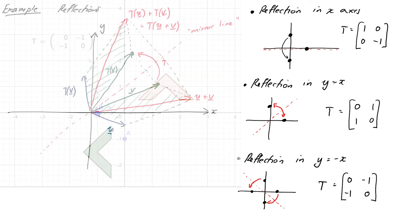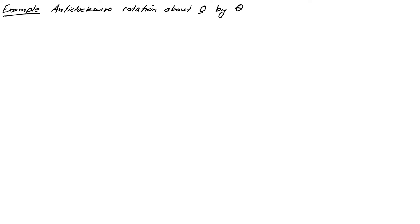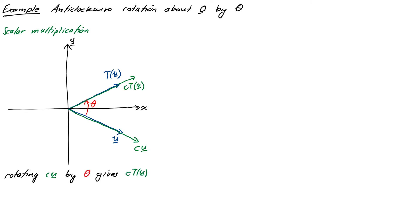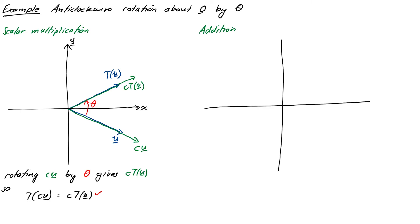It turns out rotations around the origin are also linear. Imagine a transformation that rotates points anti-clockwise by angle theta around the origin. For scalar multiplication: T(c·u) means stretch the vector by factor c then rotate, while c·T(u) means rotate first then stretch by c — we get the same result in both cases. For addition: T(u+v) means add the two vectors first then rotate the result, which is the same as T(u)+T(v) — rotate first then add.